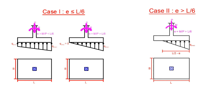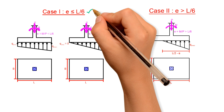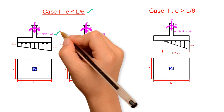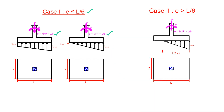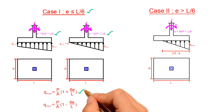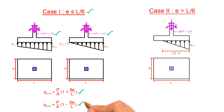There are two cases for calculating soil pressures in eccentrically loaded footings. For Case 1, if the eccentricity E is less than or equal to L over 6, the soil pressure is trapezoidal (or triangular when equal). The maximum soil pressure Q_max equals P divided by the footing area, multiplied by (1 plus 6E over L). The minimum soil pressure Q_min equals P divided by the footing area, multiplied by (1 minus 6E over L).